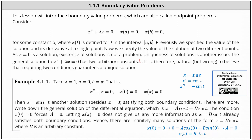This lesson will introduce boundary value problems, which are also called endpoint problems. Consider x double prime plus lambda x equals zero, where x of a equals zero and x of b equals zero for some constant lambda, where x of t is defined for t on some closed interval from a to b. Previously, we specified the value of the solution and its derivative at a single point. For boundary value problems, we specify the value of the solution at two different points.